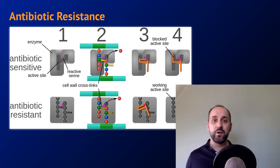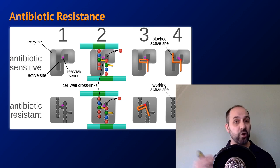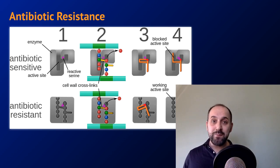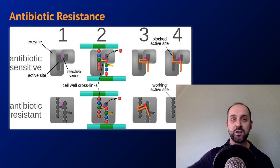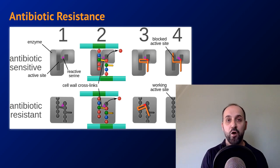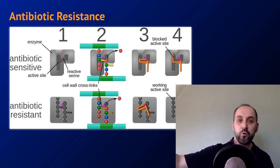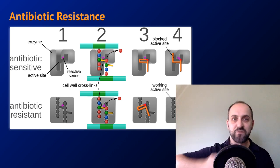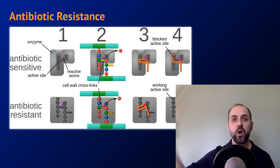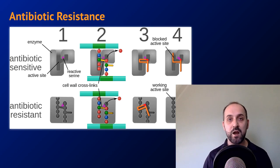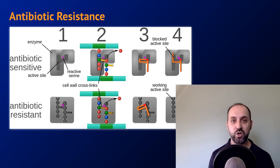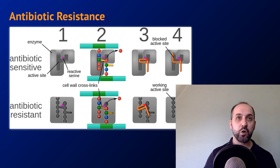We see this in bacteria because their generation times are incredibly short — maybe 20 minutes in optimal conditions to go from one generation to the next. Over the span of a year, we're going to have thousands of generations of bacteria. That's thousands of times for the natural selection process to occur if antibiotics are present, which drives that population to evolve resistance very quickly.